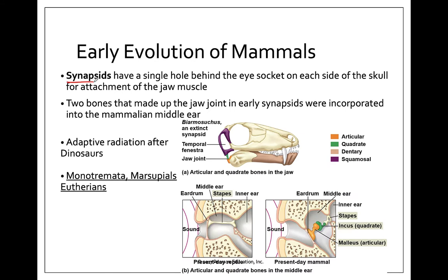Mammals come from the group called the synapsids, and these have one hole in the skull. This here is the eye, and this hole is going to allow muscles to attach down to the jaw and then come up and attach to the head.